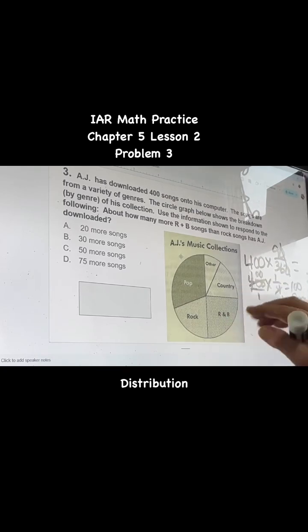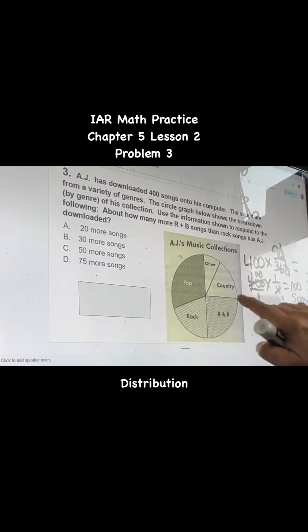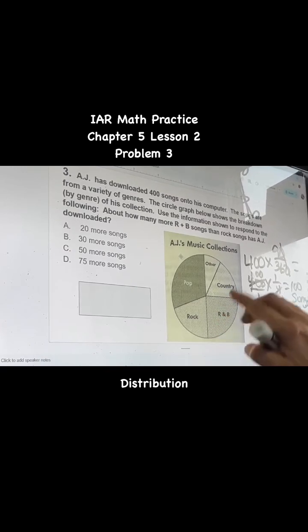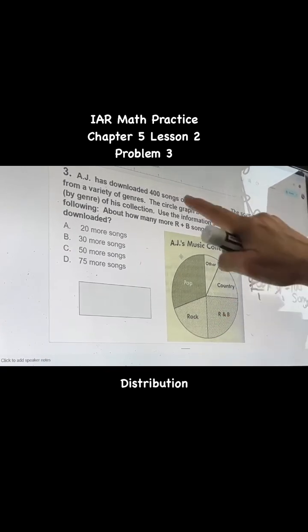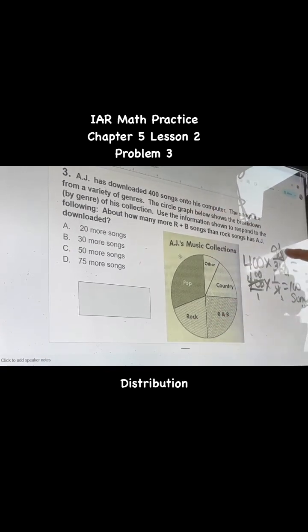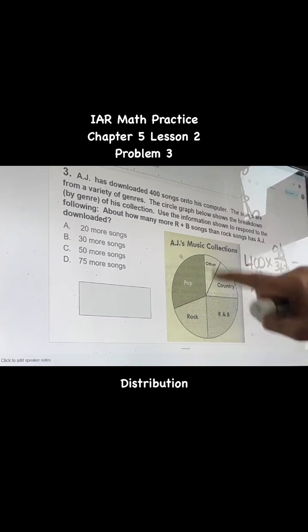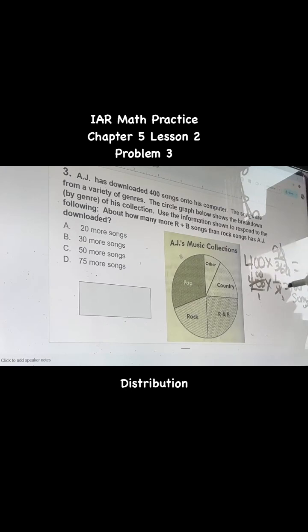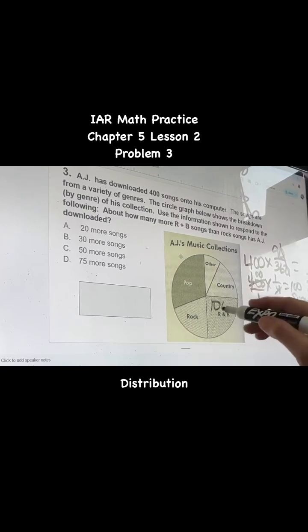So I started this. R&B, if you look at it, it's at a 90 degree angle. So I did 400 songs total times 90 degrees over 360 for a whole circle. Then I reduced this 90 over 360 to one-fourth. And then I multiplied across. That's 100 songs for R&B.